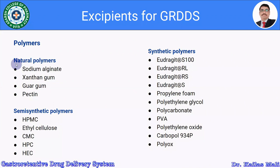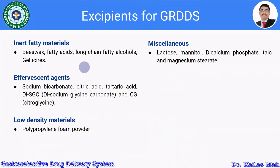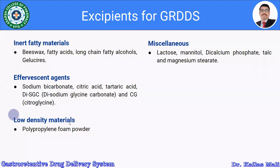Along with the polymers, we also use inert fatty materials like beeswax, fatty acids, long-chain fatty alcohols, and Gelucires. In the case of floating drug delivery systems, we use sodium bicarbonate, citric acid, tartaric acid, disodium glycine carbonate, and citroglycine. For low density gastroretentive drug delivery systems, we use propylene foam powder. Miscellaneous excipients include lactose, mannitol, dicalcium phosphate, talc, and magnesium stearate.